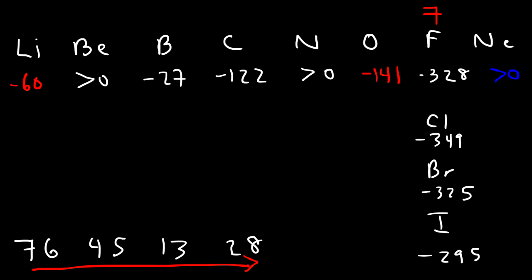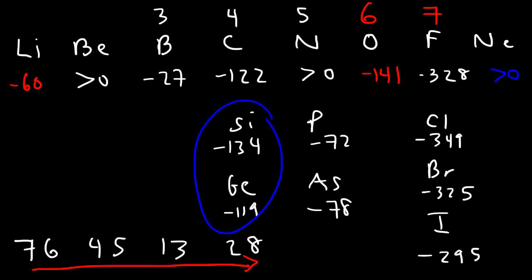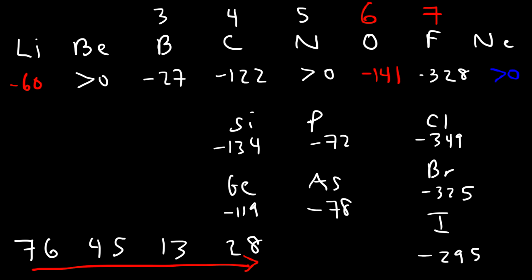Group 6 is the second most exothermic, then group 4, then group 5. Nitrogen is endothermic so you might think group 3 is more exothermic than 5, but the other group 5 elements — silicon, phosphorus, germanium, and arsenic — are all exothermic: silicon is negative 134, germanium negative 119, phosphorus negative 72, and arsenic negative 78. So group 4 is on average more exothermic than group 5.